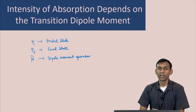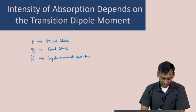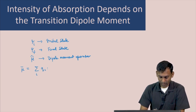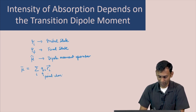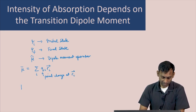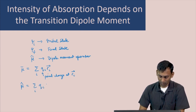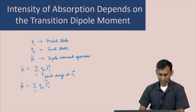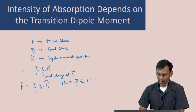To define the dipole moment operator, we start with the dipole moment property, which is a vector quantity: the sum over i of q_i r_i, where q_i is the point charge at position r_i. Using this property, we can define the dipole moment operator mu-hat, with the position vector replaced by the position operator. This dipole moment operator has three components; the x-component would be the sum over q_i times x_i, and similarly you can write expressions for the y and z components.